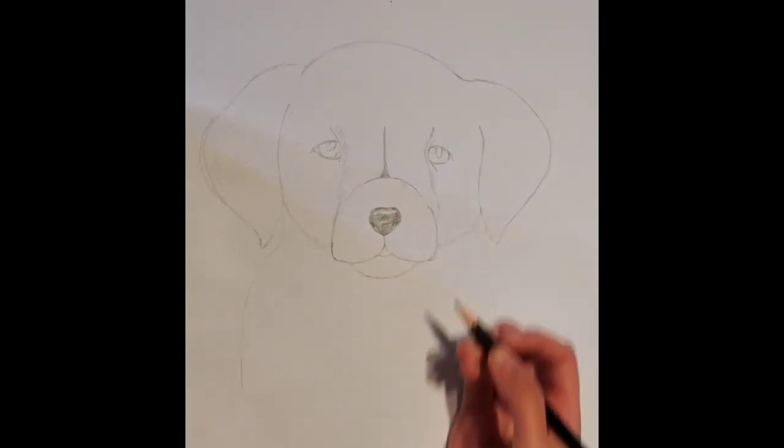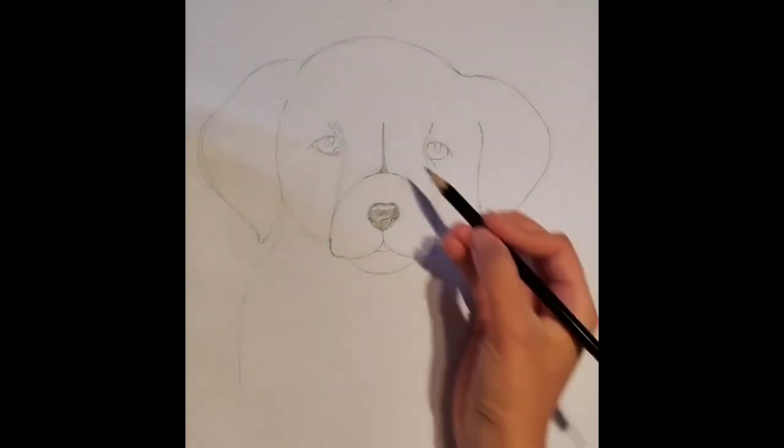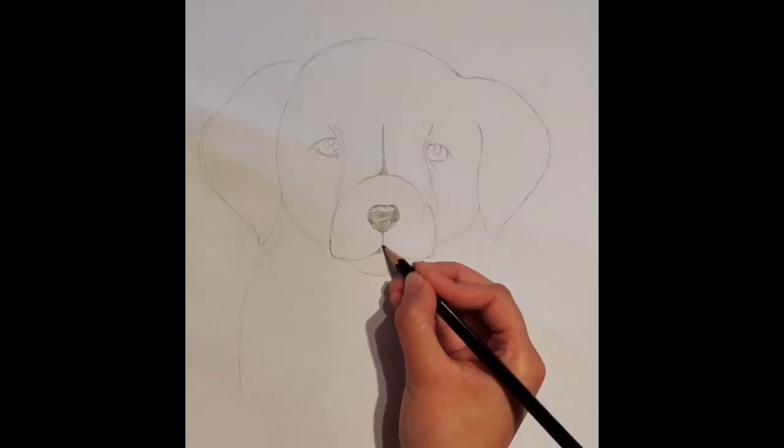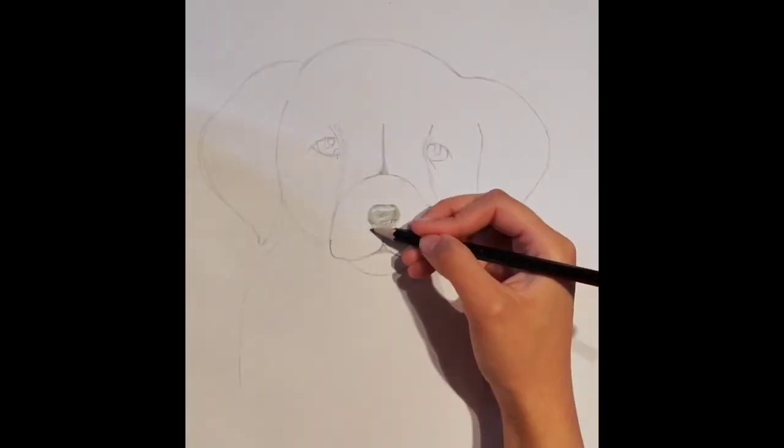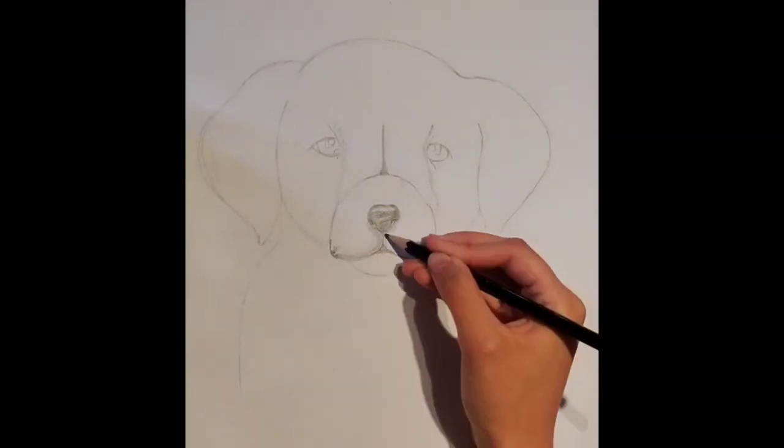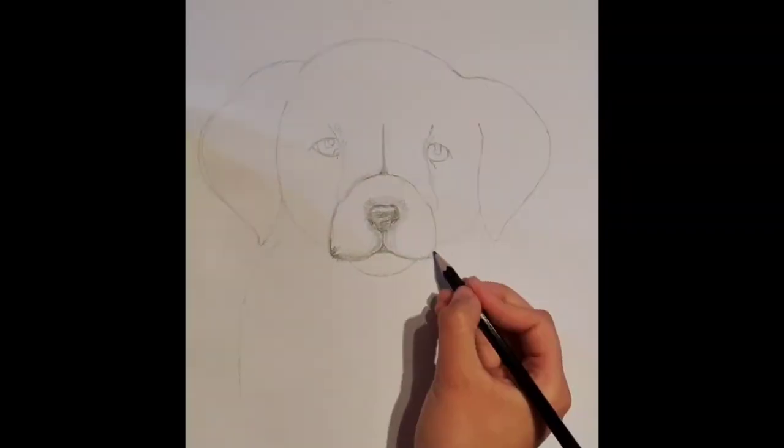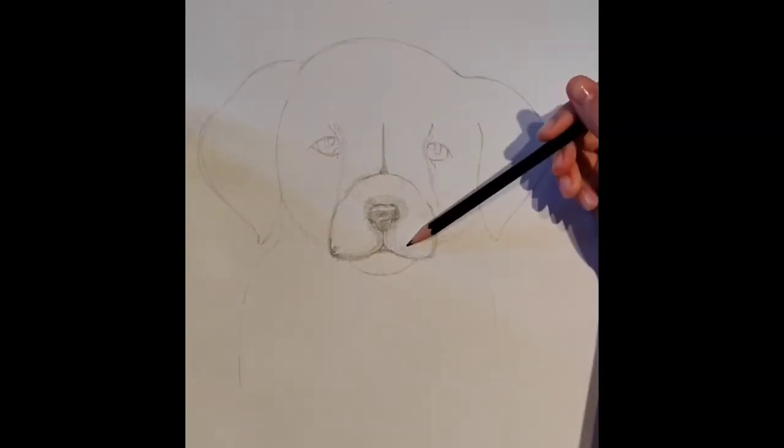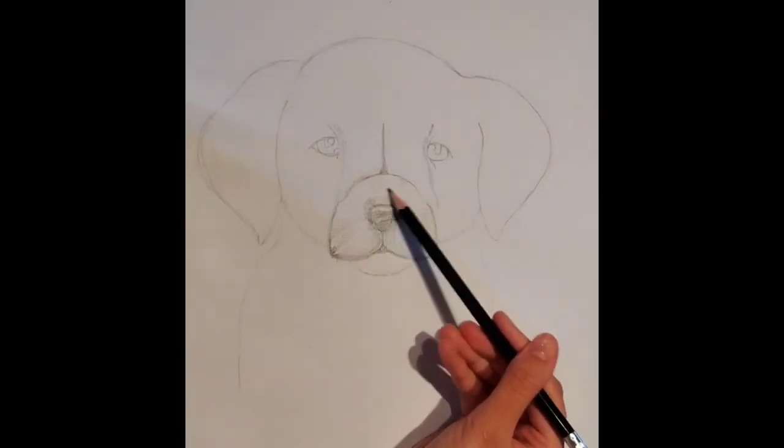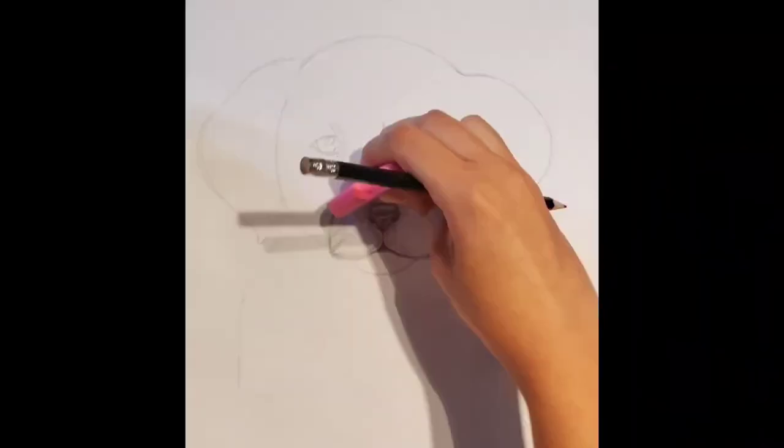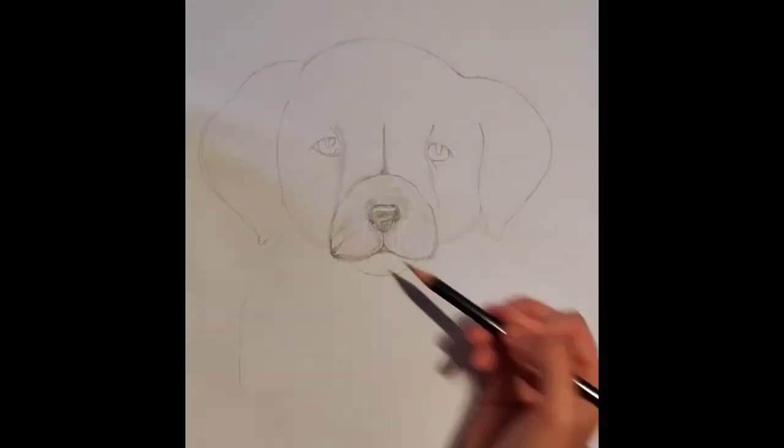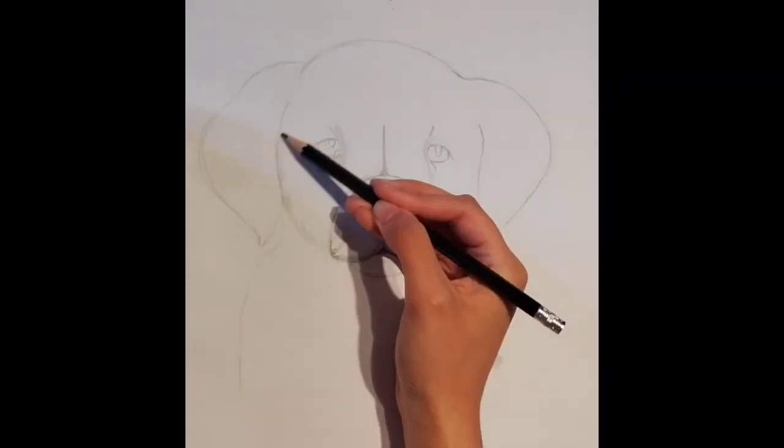Now that our nose is complete, it's time to do the fur. When doing dog's fur, make sure to keep the strokes in the same direction. As well as making sure to point out where the shadows and highlights go. Face your pencil in a certain way. That way you can create soft strokes as dog fur is usually soft, not rough.